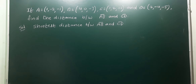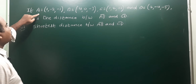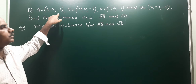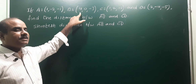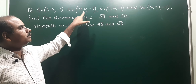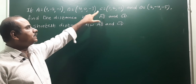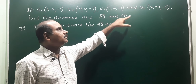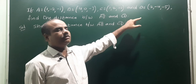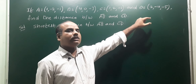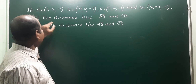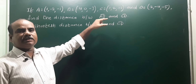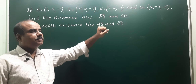Next one: if A is equal to (1, -2, -1), B is equal to (4, 0, -3), C is equal to (1, 2, -1), and D is equal to (2, -4, -5), find the distance between AB bar and CD bar.